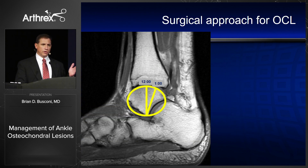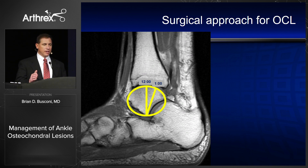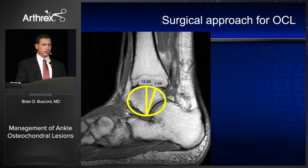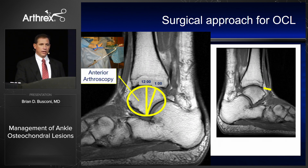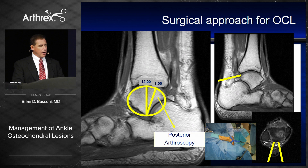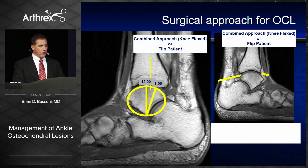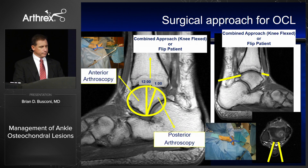For surgical approaches to these osteochondral lesions, I divide the talus in half and make that the 12 o'clock position. Everything anterior to that 12 o'clock position I do through anterior arthroscopy. Everything posterior to the 12 o'clock position I will have the patient prone and do a posterior arthroscopy — or, most commonly in my practice, I do a combined anterior and posterior approach.